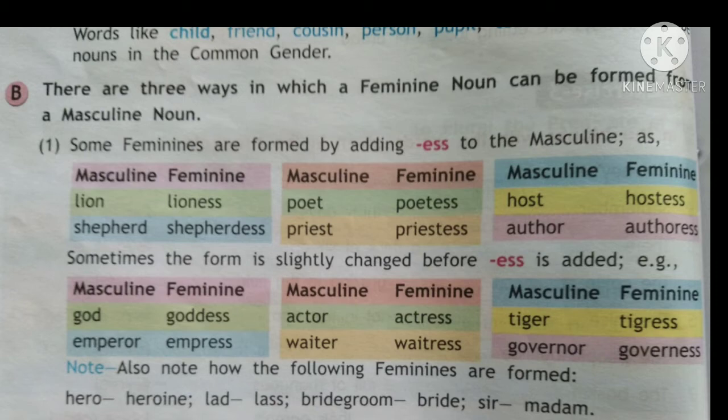Now note also how the following feminines are formed. Hero — the spelling changes and it becomes heroine, H-E-R-O-I-N-E. Lad — that is a small boy — we call the girl lass. Bridegroom is the dulha and bride is the dulhan. And sir becomes madam. So these are little changes to keep in mind while changing from masculine to feminine.